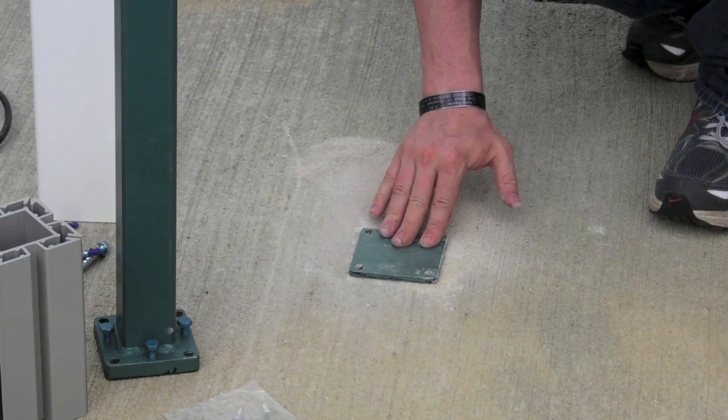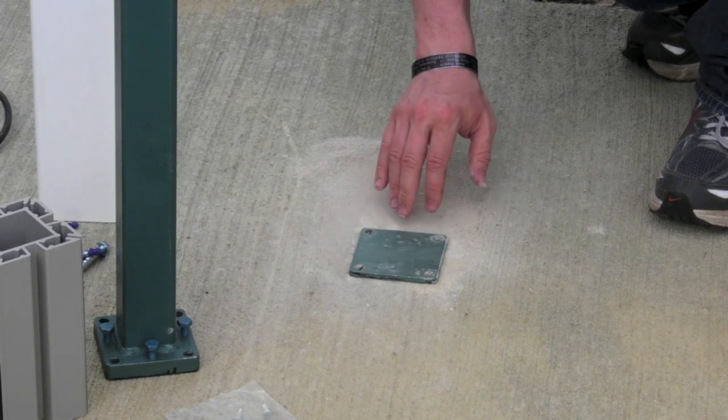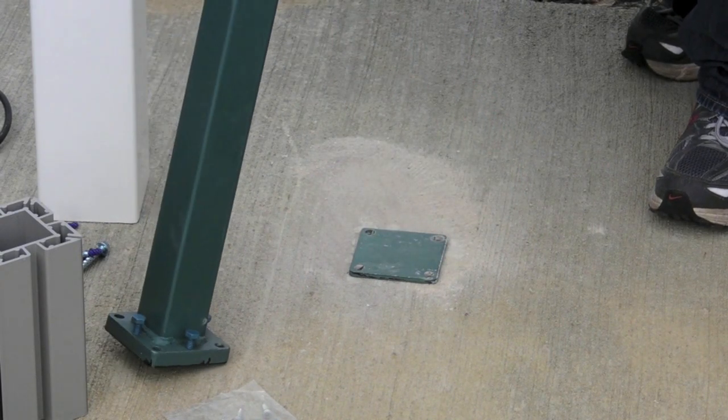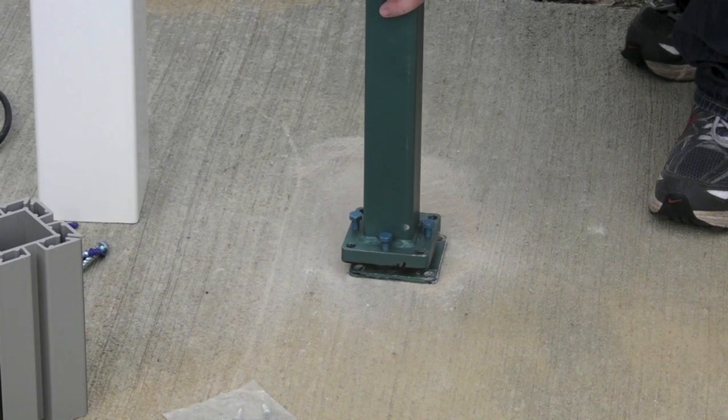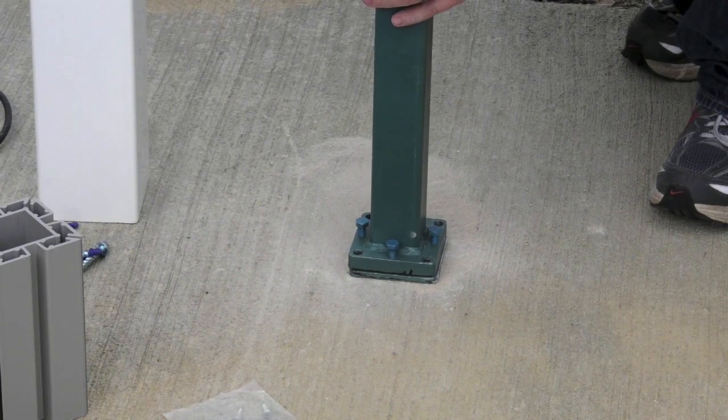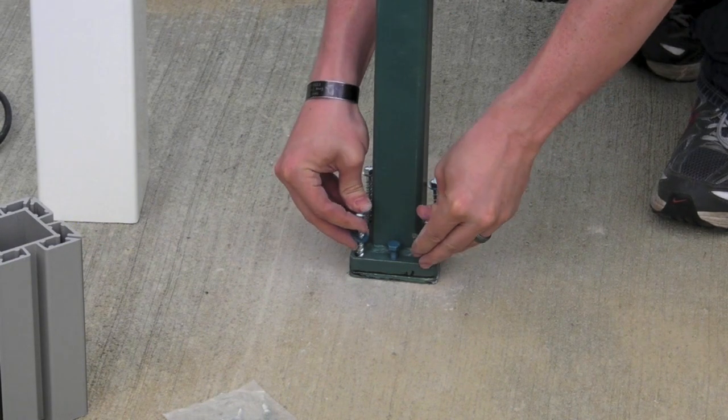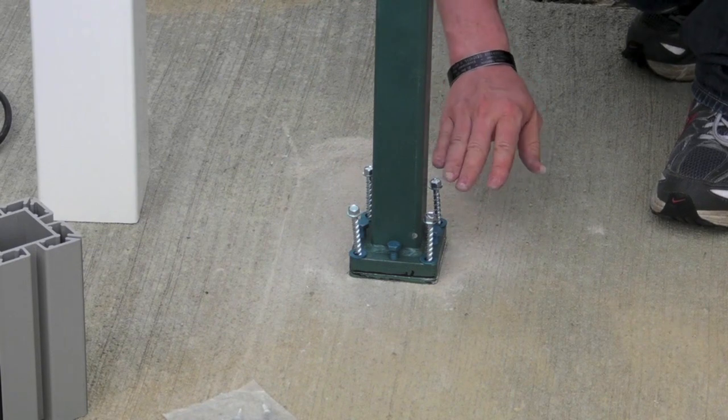The next thing you'll do is take your leveling plate, place it over the four holes you just drilled, take your post mount, place it on top, install your concrete legs and go ahead and tighten them down.